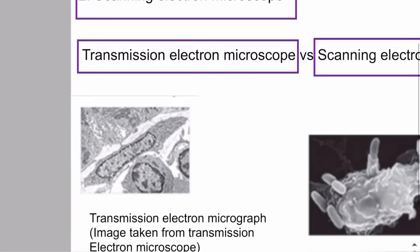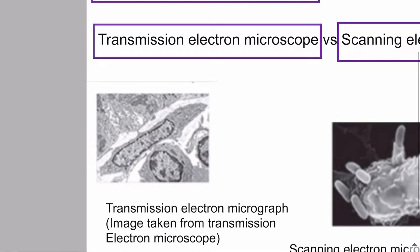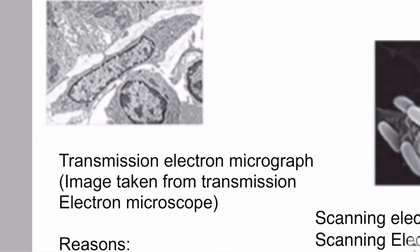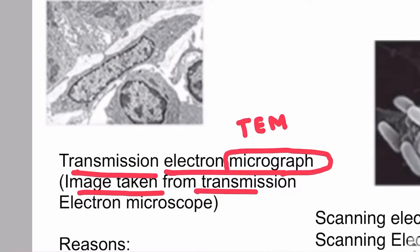The picture taken from the transmission electron microscope is called a transmission electron micrograph. The term 'micrograph' specifies the image. So if it is written as transmission electron micrograph or TEM, then it is the picture taken from the transmission electron microscope.